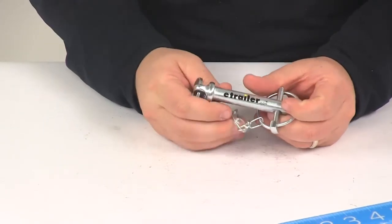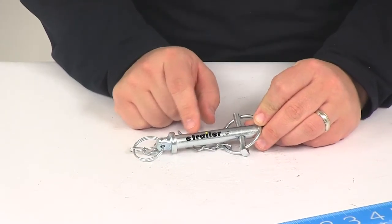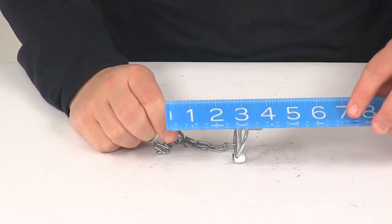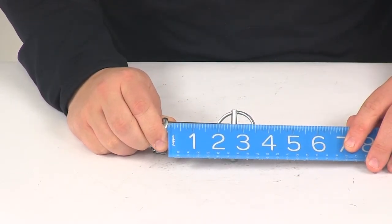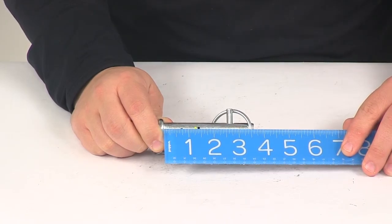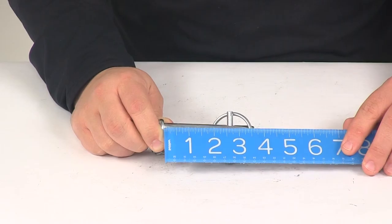So the usable pin length, what we're going to do is measure from the bottom of the head right here to the pin right here. That's going to give us the usable pin length for the unit and that measurement is going to be right around two and nine sixteenths of an inch, so pretty close to two and a half inches.